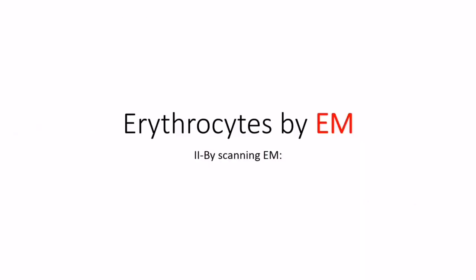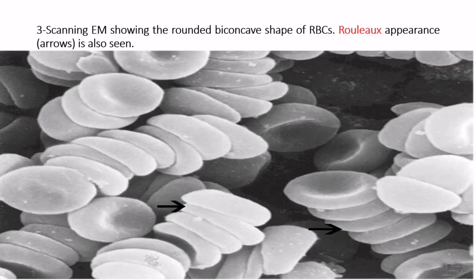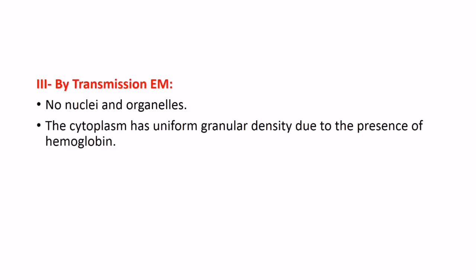Erythrocytes by electron microscope: using the scanning electron microscope, the rounded biconcave shape of RBCs is clearly shown. Rouleau appearance, marked by arrow, is also seen. By transmission electron microscope, there are no nuclei or organelles.